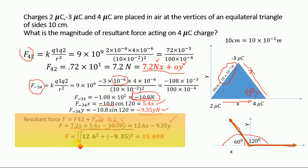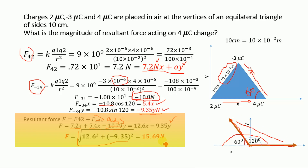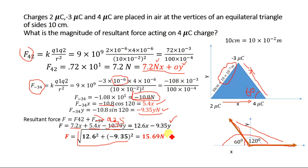This uses the Pythagorean theorem for calculating the hypotenuse, where the magnitude equals √(x² + y²). The magnitude of the force is √(12.6² + (−9.35)²) = 15.69 N. So the magnitude of the resultant force acting on the 4 µC charge is 15.69 N. This is the required answer.